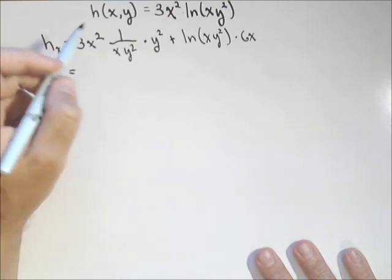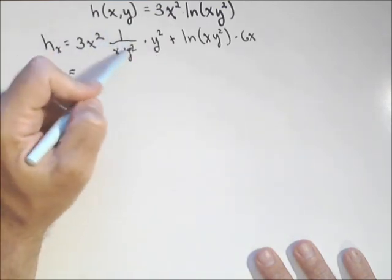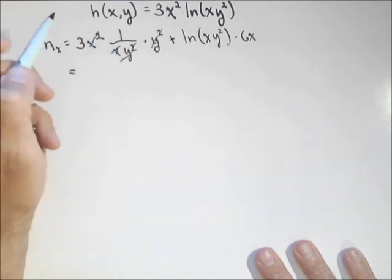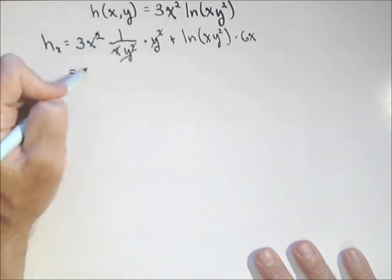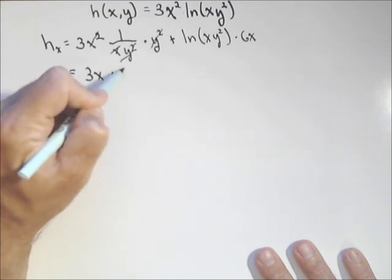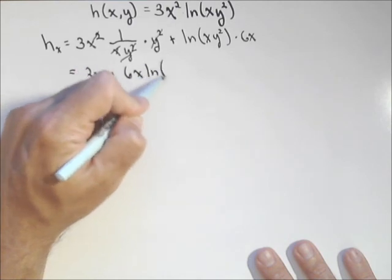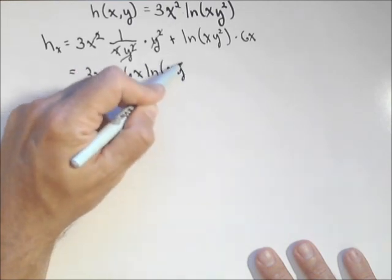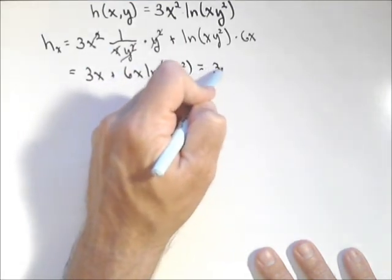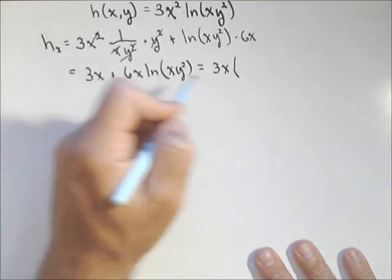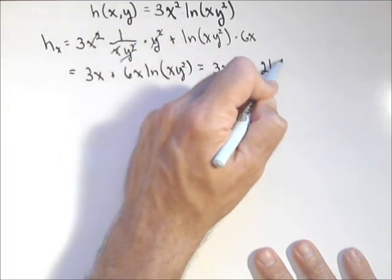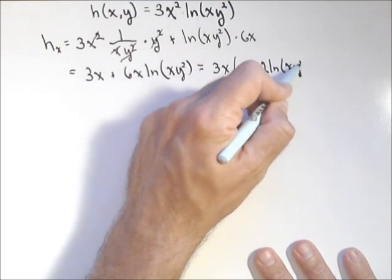See what kind of, there's gonna be a little bit of simplifying we can do here. For instance, this y squared and this y squared, it'll cancel out. This x will cancel out with one of these x's. And we have three x plus six x ln of x, y squared. We could actually take it a step further if we wanted and factor out the three x times one plus two ln of x, y squared.